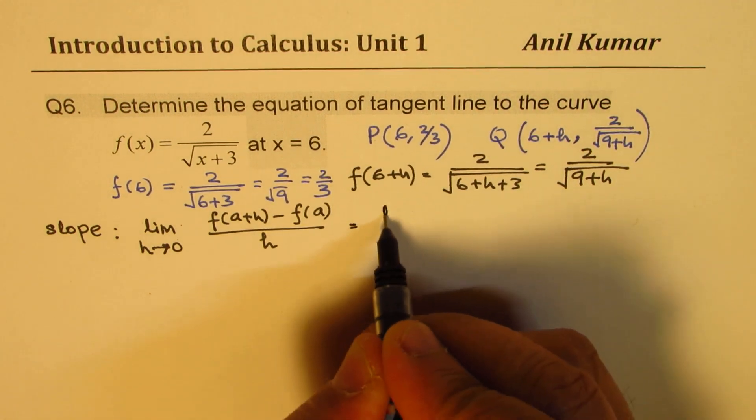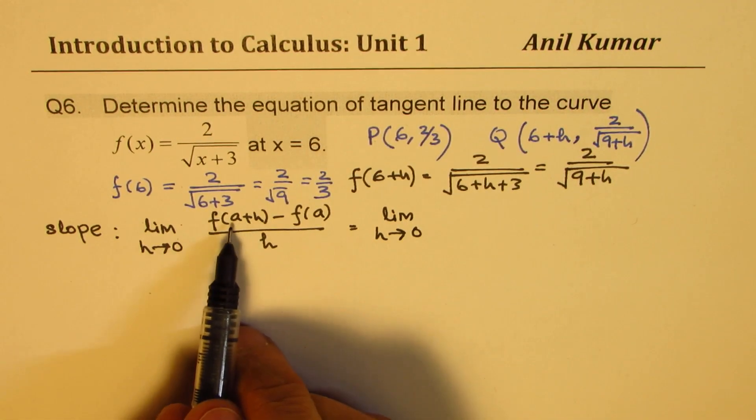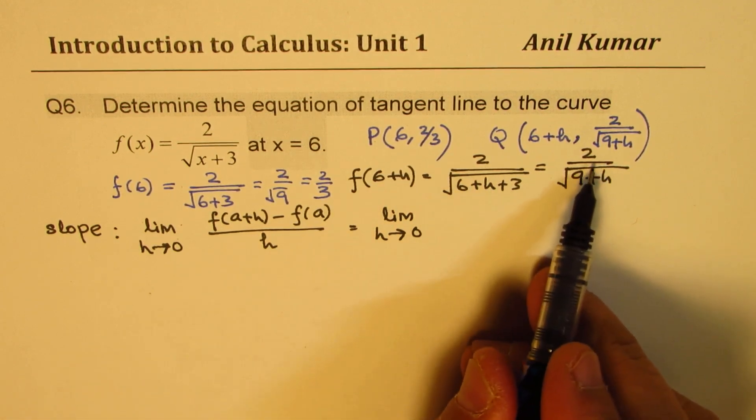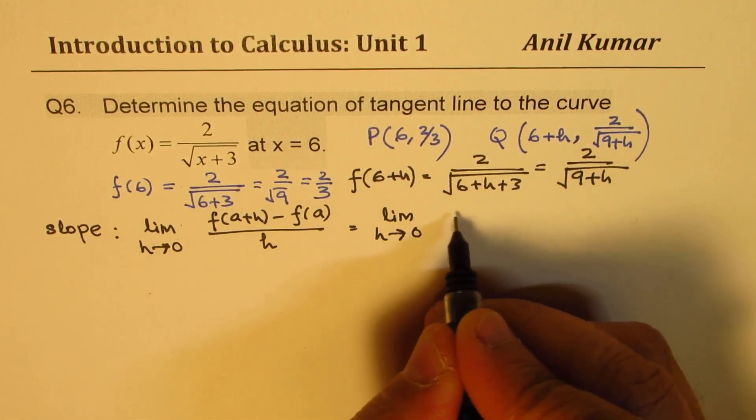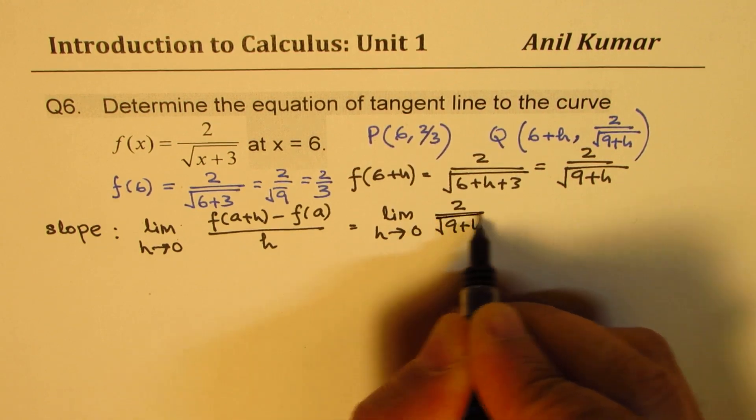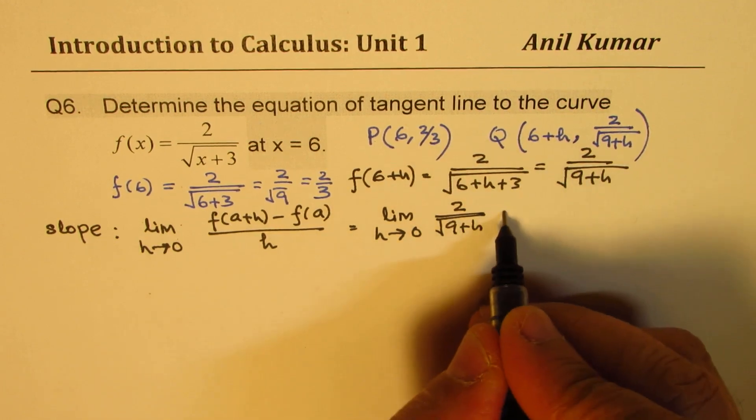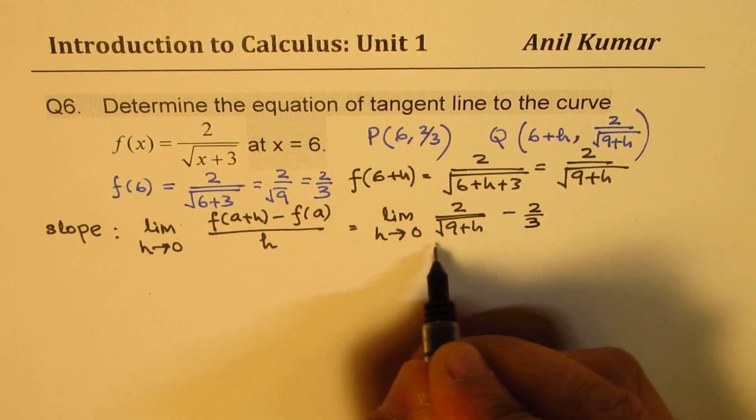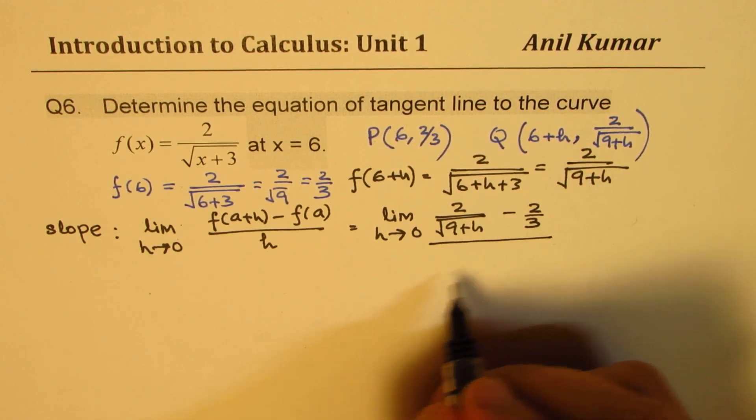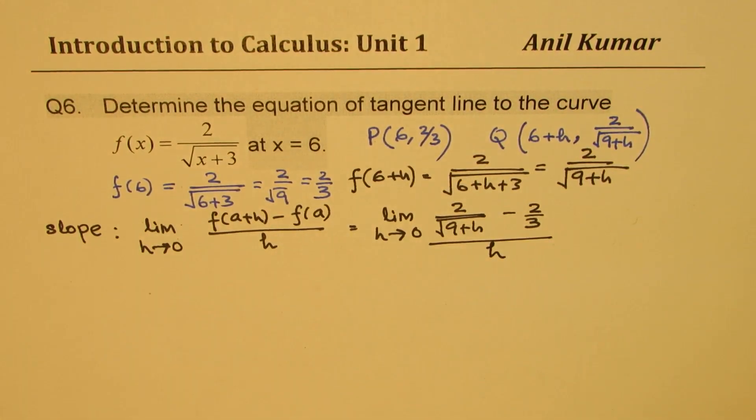So this could be written as limit h approaches 0: f(a+h) we just found is this expression which is 2/√(9+h) and f(a) is 2/3, so minus 2/3, everything divided by h. So that is the limit which we are trying to find.